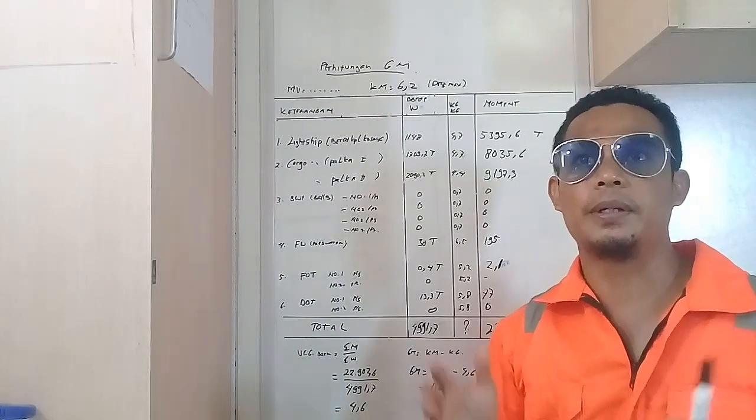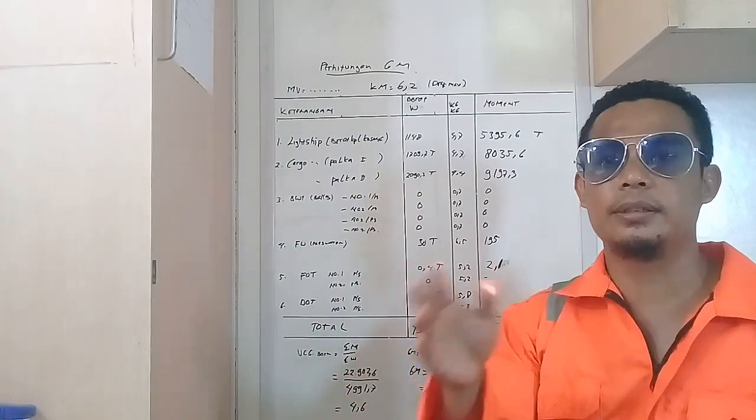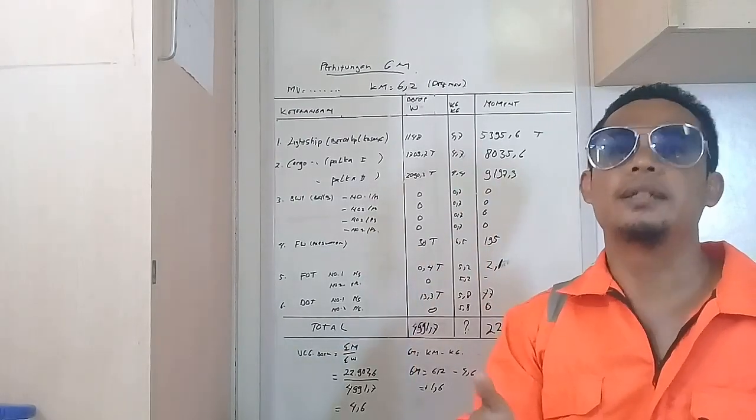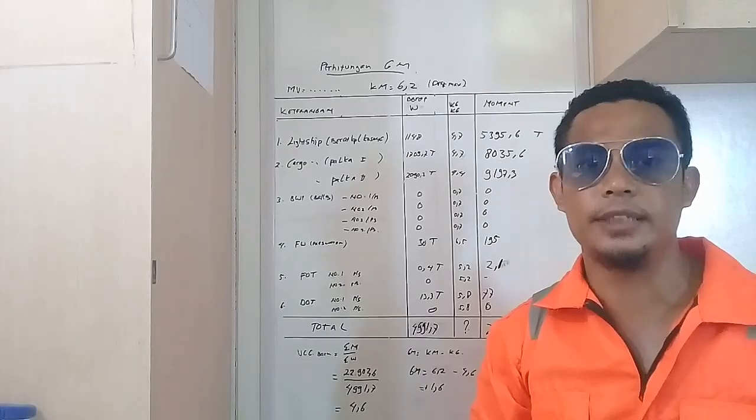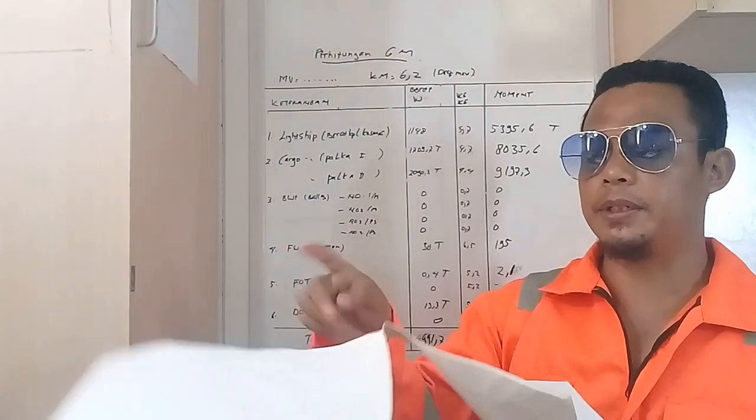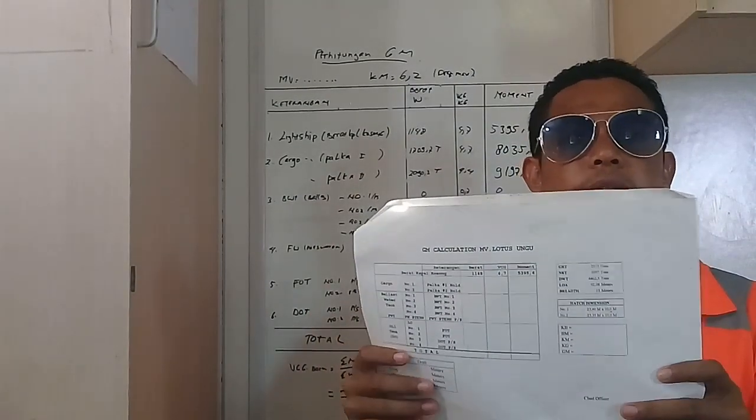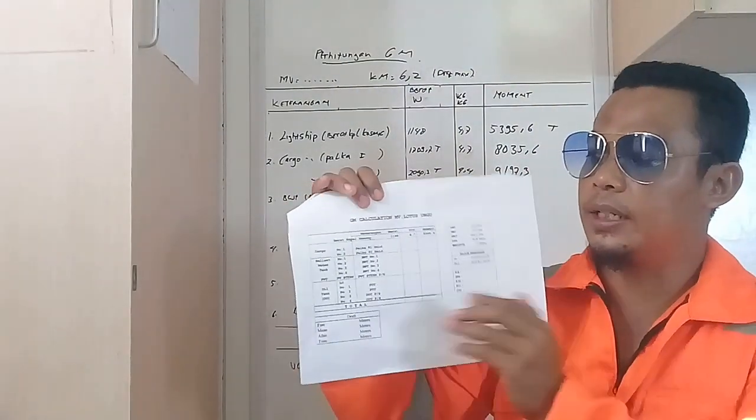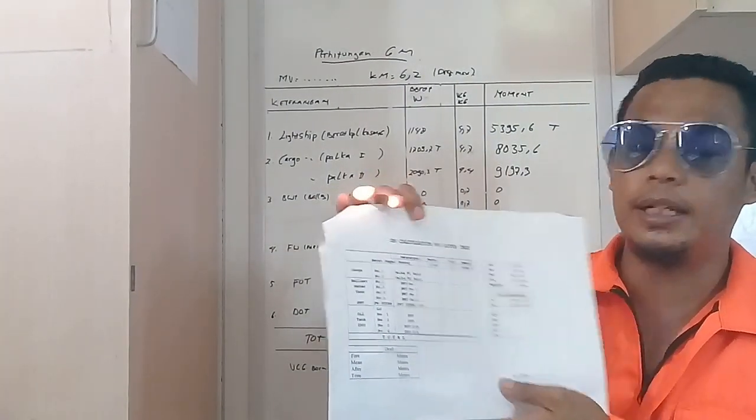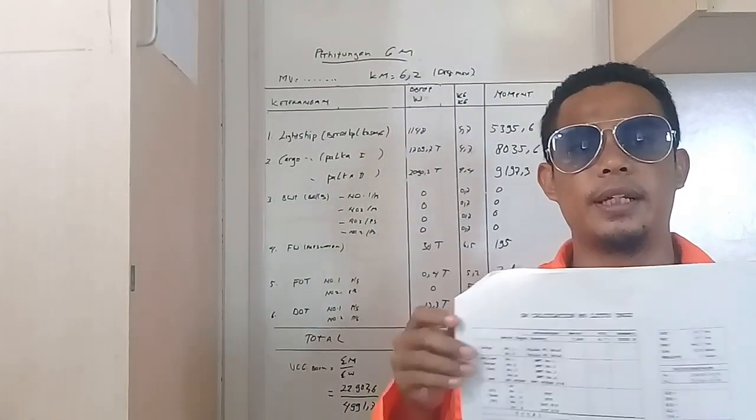Sehingga apabila kapal kita mengalami gelombang dari luar, kapal kita mengalami gaya-gaya dari luar, masih akan bisa tegak kembali. Itu guna perhitungan daripada GM. Untuk memudahkan anda menghitung, anda bisa membuat form seperti ini di komputer anda, terserah bagaimana cara bentuknya, dan masukkan data-data yang diperlukan dalam perhitungan GM. Dan ini menjadi salah satu dokumen pemuatan. Oke, sekian dan terima kasih.